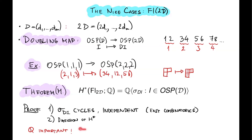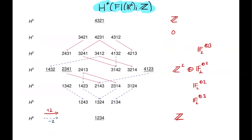Rational coefficients are important here because these cohomology rings also contain a lot of two-torsion elements. But with rational coefficients, the situation is really just as simple. Surprisingly, the not-so-nice cases are the complete flag varieties.